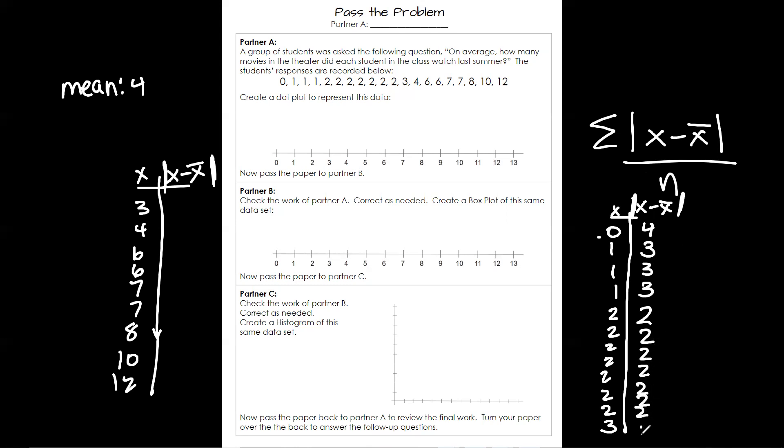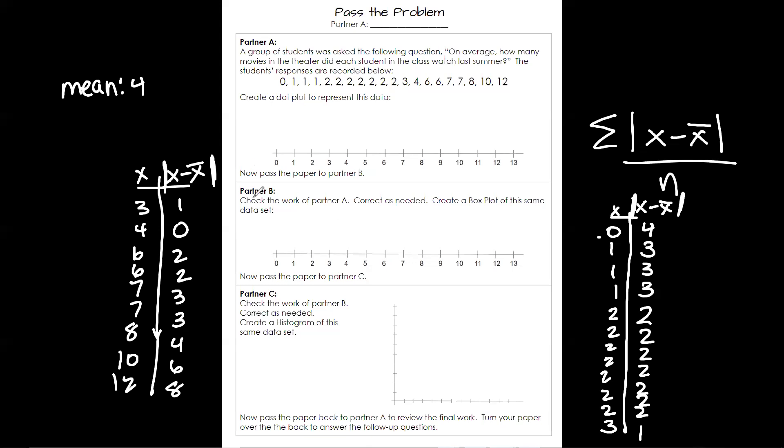Then you're going to do 1 minus 4. That's negative 3. We're going to take the absolute value. That's going to make it positive. You're going to do that for every single number that's in your table. So, go ahead and do that. 5, 6, 7, 1, 10, 0, 2, 2, 3, 3, 4, 6, 8. So, once you get your little chart filled out, what you're going to do is you're going to take all of these numbers that you just found, add them all up. And then you're going to divide by how many numbers there are. So, there are 20 numbers in total. So, add this column up. And then divide by 20.